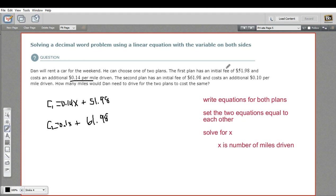Now we've done this step, let's do this step. We want to set the two equations equal to each other. So the cost is going to be the same, C₁ equals C₂. That means I can set this portion equal to this portion. So I'll have 0.14X plus 51.98 equals 0.1X plus 61.98. Now I have an equation with one variable X. It's on both sides, so I'll have to figure that out, but I can solve this for X. When I do, I'm going to get the number of miles driven where the plans cost the same.